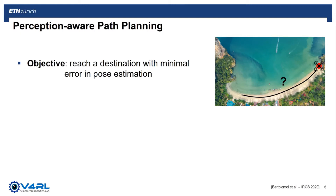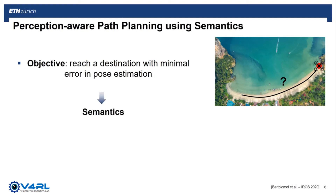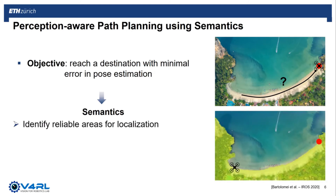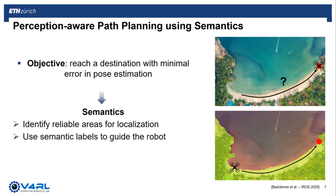In this work, we propose to use semantics to fill this gap. Semantics can help to label the space, for example differentiating between land and water. Using this information, we can use the semantic labels to generate perceptually more informative paths.